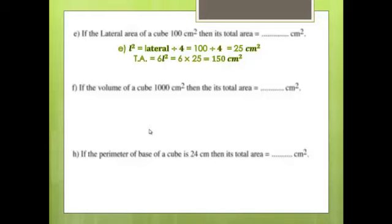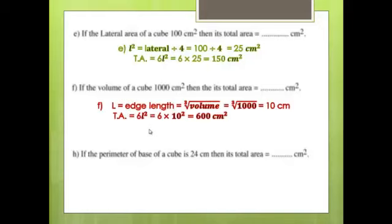Question 1F: The volume of a cube is 1000 cm³. Find its total area. L = cube root of 1000 = 10 cm. Total area = 6L² = 6 × 10² = 600 cm².